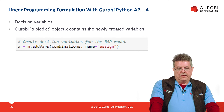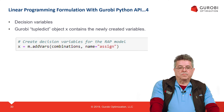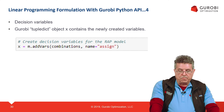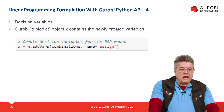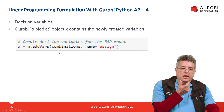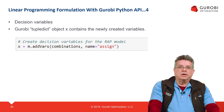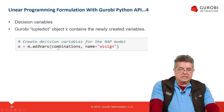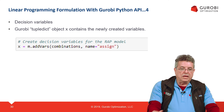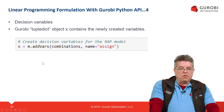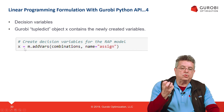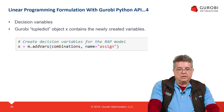The first thing we need to do when defining a linear programming model is to define the variables. For that purpose, we use a method of the model object M called the addVar method. The addVar method will be defined over the combinations in the MultiDict function, sharing the same keys. The name of the variable will be 'assigned', and X will be the object that captures all the decision variables in this LP formulation.